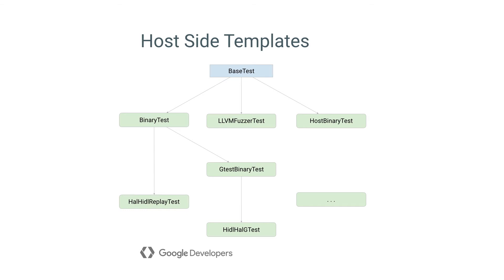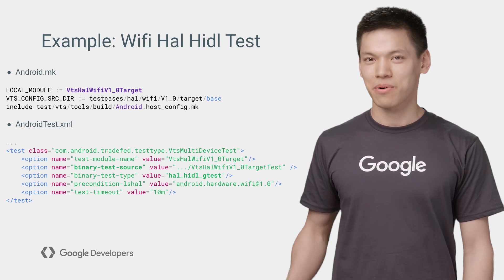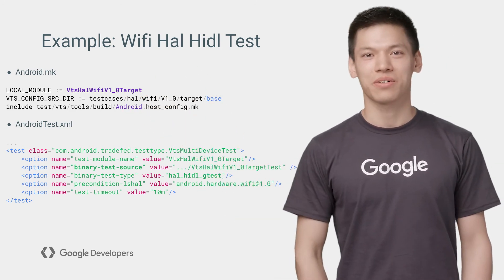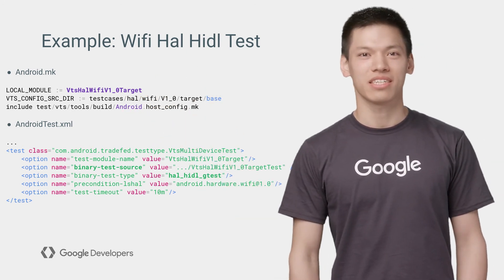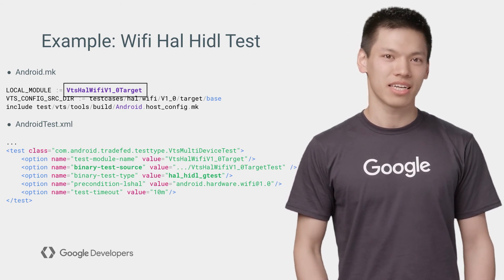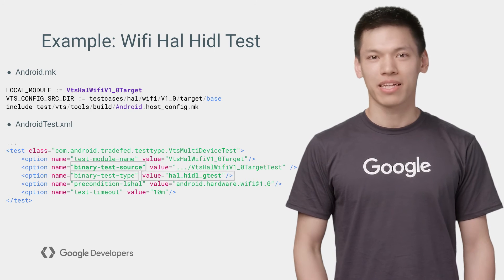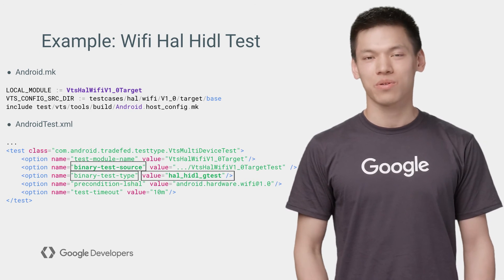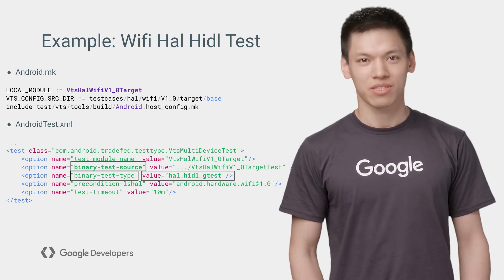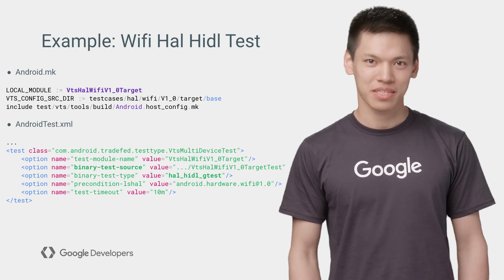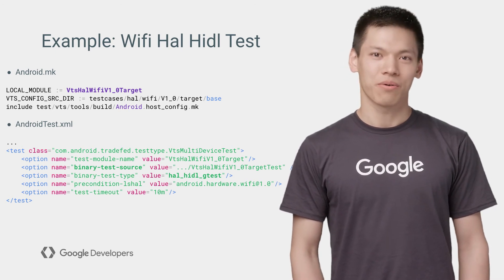Besides helping with test integration, developers are welcome to write tests by extending from these test templates. Here are examples of how the target-side Wi-Fi HAL test is integrated into VTS by specifying the test module name in Android.mk and then the binary test source path in AndroidTest.xml. You can find much more detail and examples in our code lab.